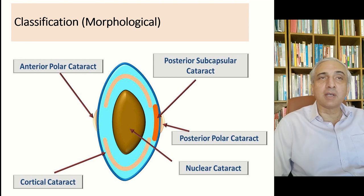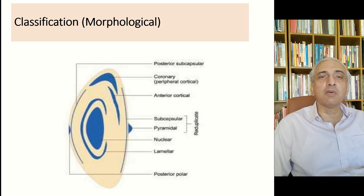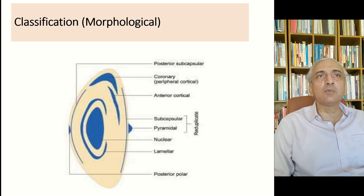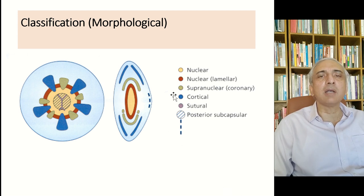Different methodologies in phacoemulsification are used to handle different types of cataracts, and certain complications are associated with different types — that's why it's important to know the anatomy. There are also coronary cataracts, which are a type of cortical cataract. Cortical cataracts can be categorized into different shapes.